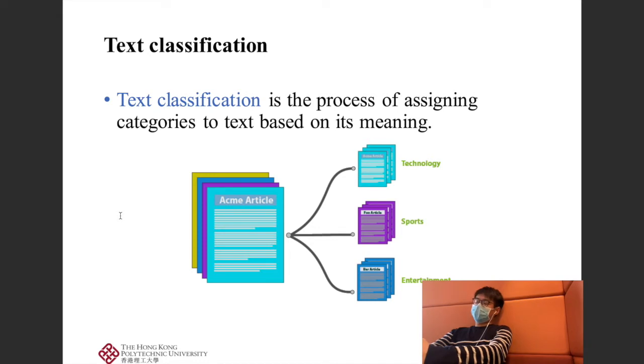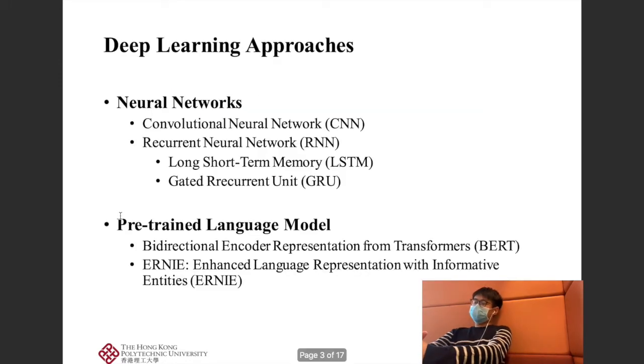Our task is to train a mathematical model that can predict the document's labels given the training samples. There are many deep learning approaches for text classification. A very early model includes convolutional neural network, and later we have recurrent neural network.